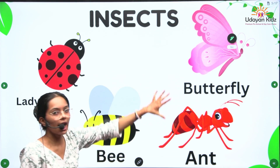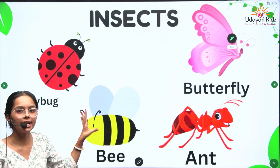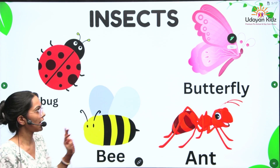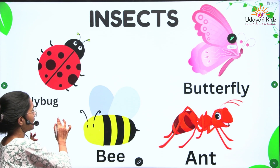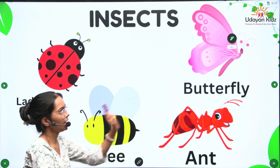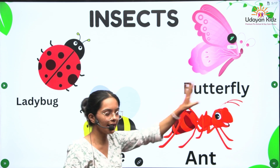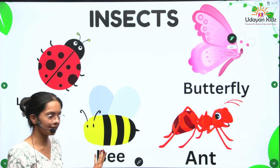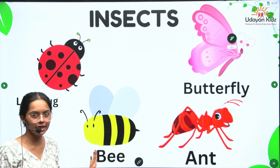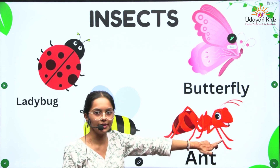Now these are insects. First one is ladybug. And this is butterfly. This is bee. And this is ant.